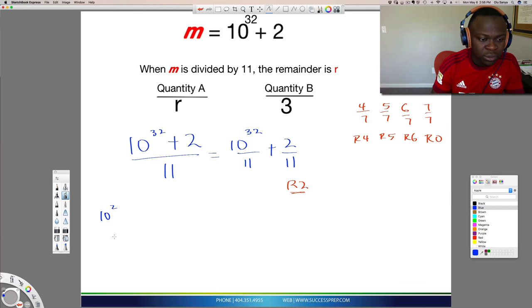10 to the 2 is 100. Let's see how that behaves when I'm dividing by 11. Let's look at 10 to the 4, which is also in the family of 10 to the 32 because they're all even powers of 10. Let's see what that does as well with 11.